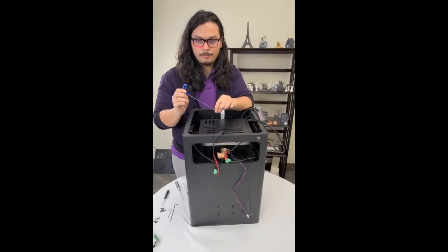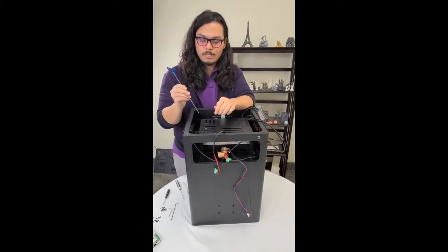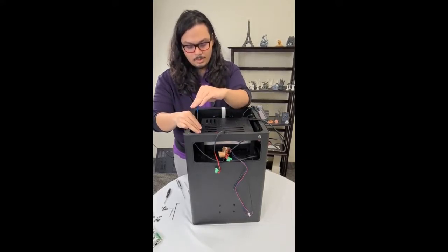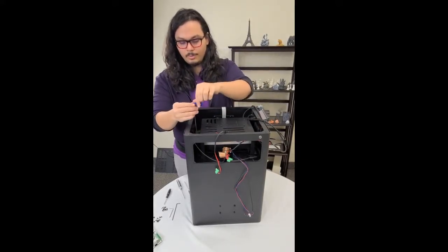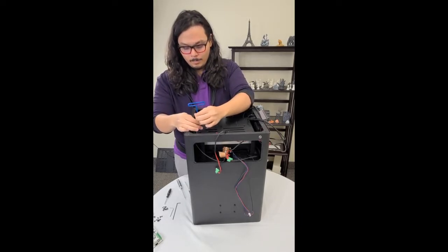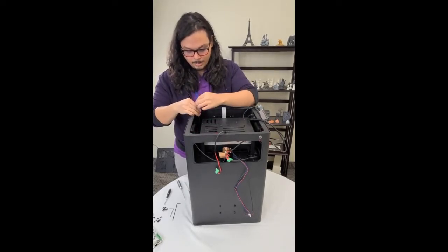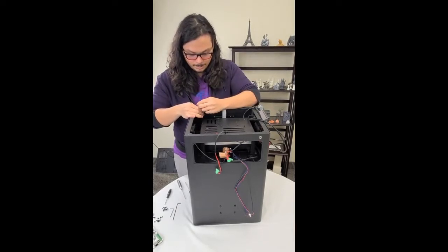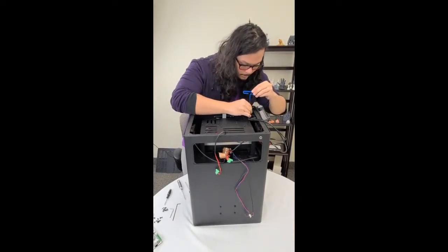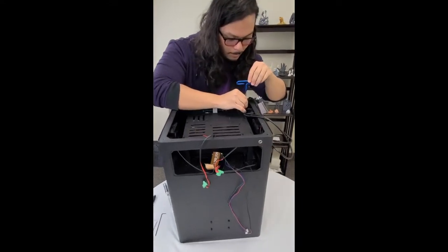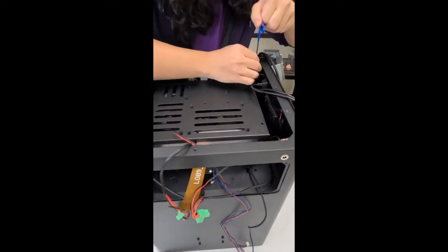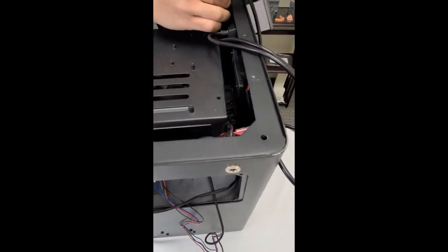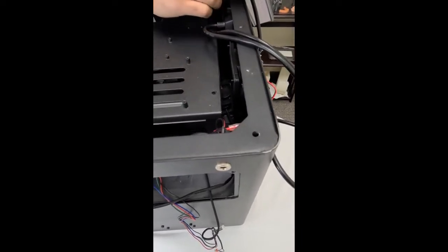So for the next part, we're going to need a 2.5mm Allen key. We recommend getting one of these long ones. It'll be just a lot easier to reach down here. If you don't have one, that's okay. These screws will also be torqued in fairly well. So again, you probably need some proper force to actually get them off. They're going to be on all four corners of this mounting bracket.